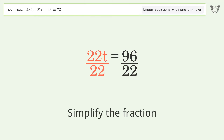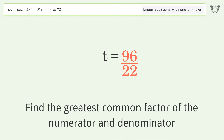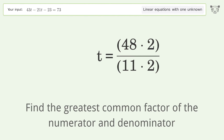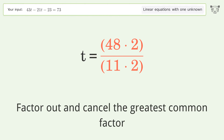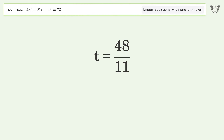Simplify the fraction by finding the greatest common factor of the numerator and denominator, then factor out and cancel the greatest common factor. And so the final result is t equals 48 over 11.